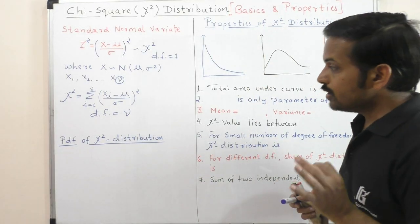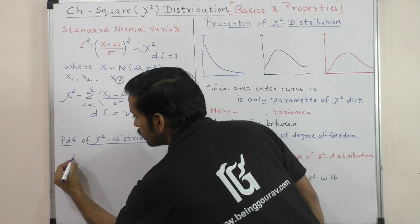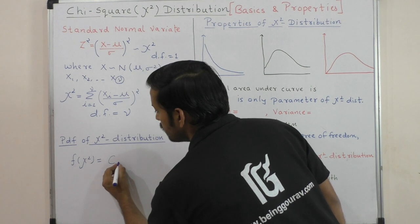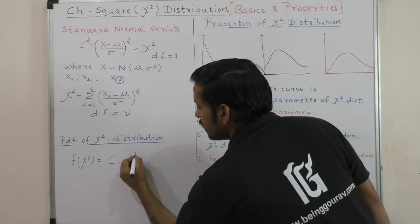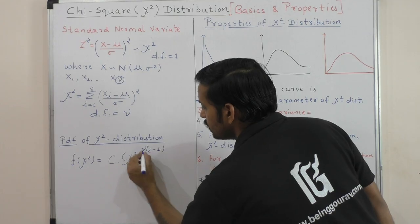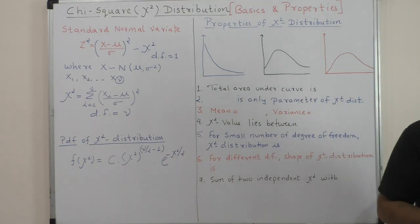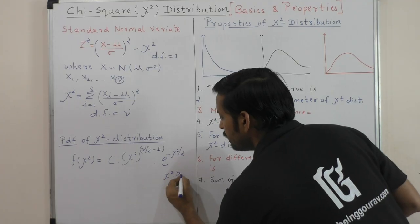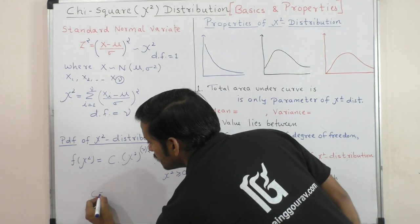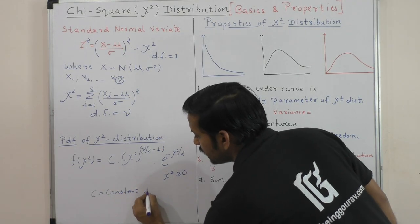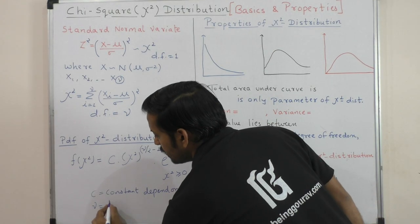Now, what is the PDF of chi-square distribution? Chi-square distribution is a continuous distribution, like the normal distribution. The PDF is: f(χ²) = C × (χ²)^(ν/2 − 1) × e^(−χ²/2). Here, C is a constant, and the chi-square value is non-negative (greater than or equal to zero). The distribution depends on one parameter — the degree of freedom, nu (or n).